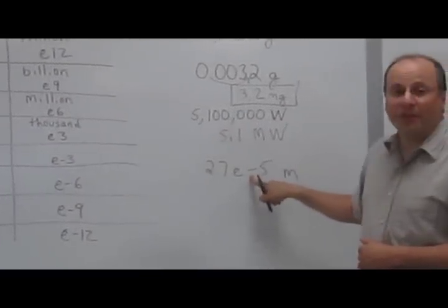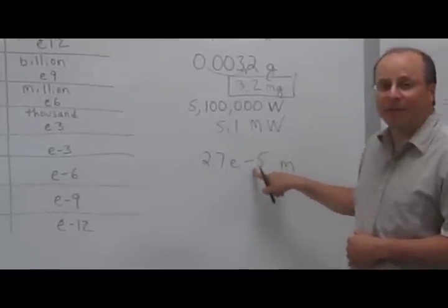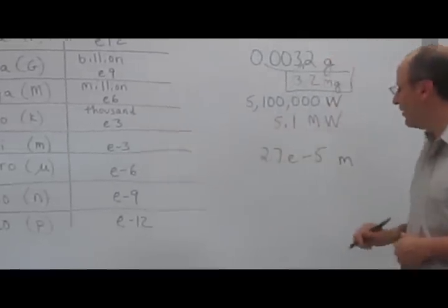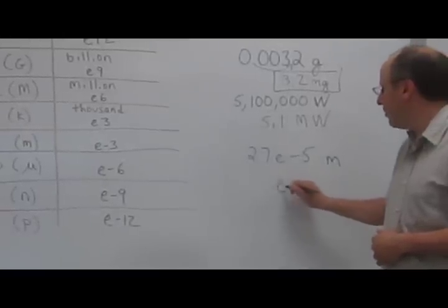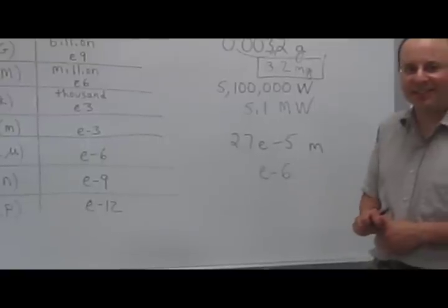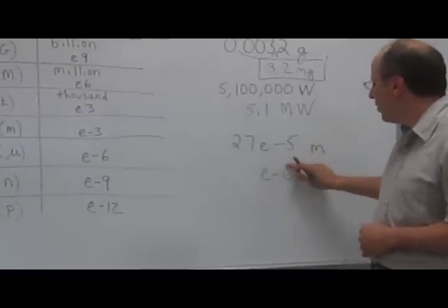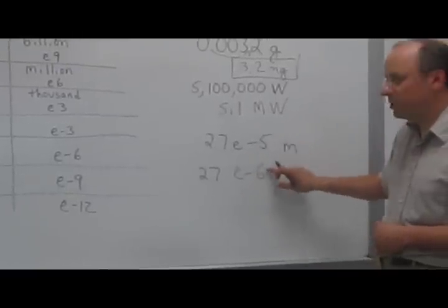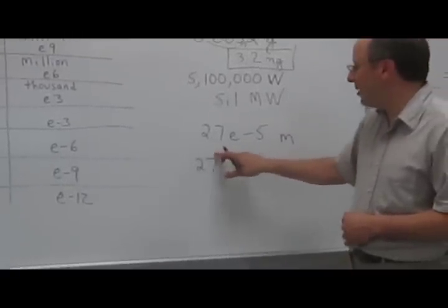Finally, if you have something like this, 2.7e to the negative 5th. Negative 5th is not one of the standard metric prefixes. So what you have to do is move it over to e to the negative 6th. When you move this over 1, you want to move this over 1. So we made this one smaller, we make this one bigger.